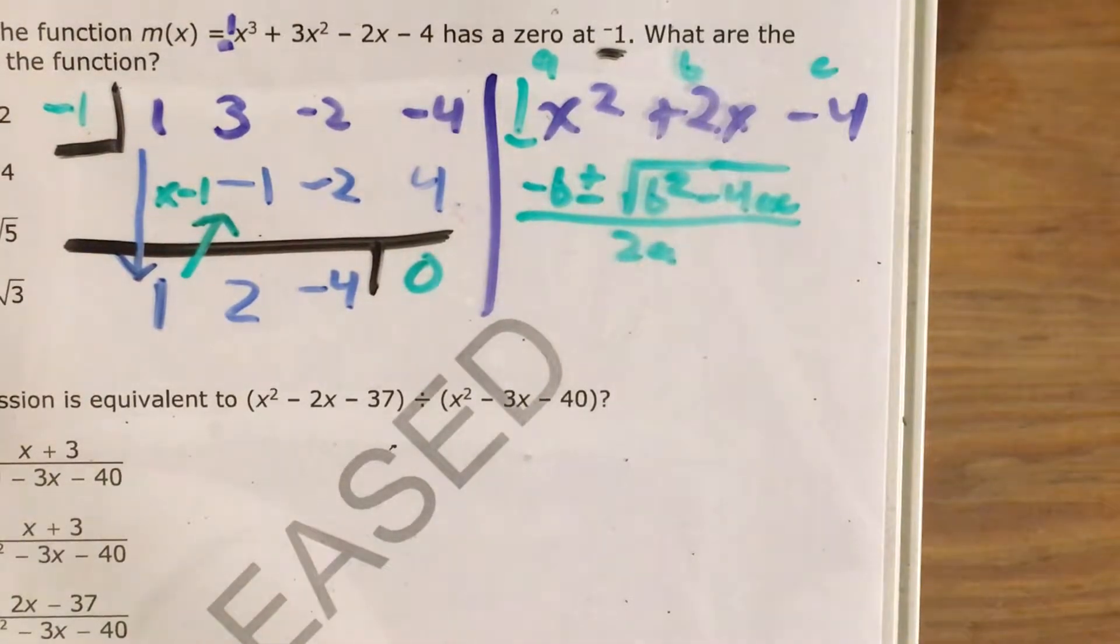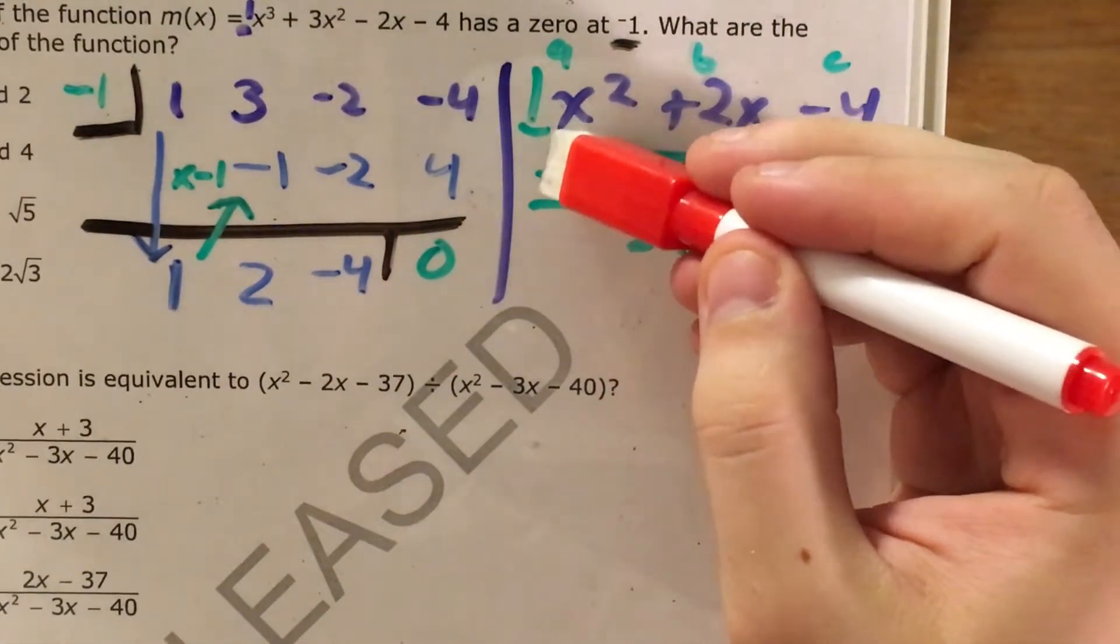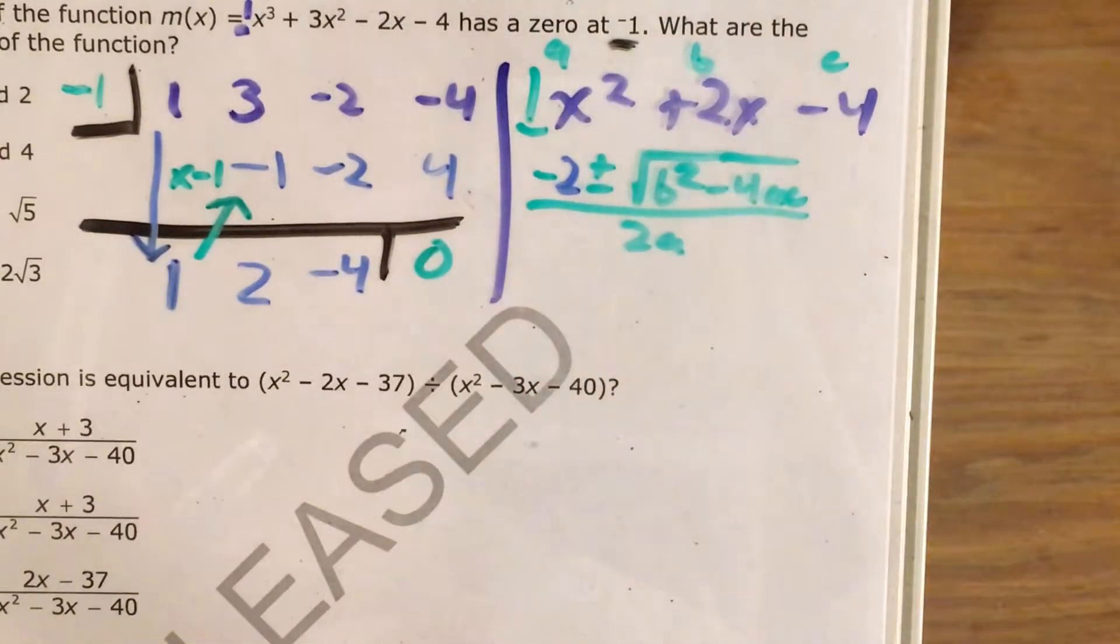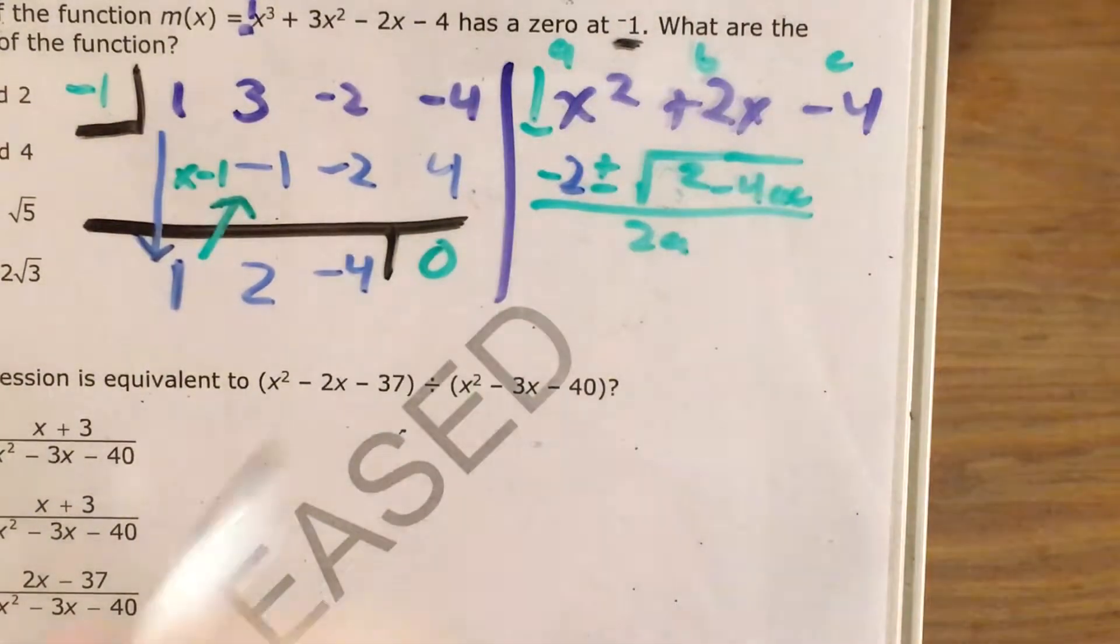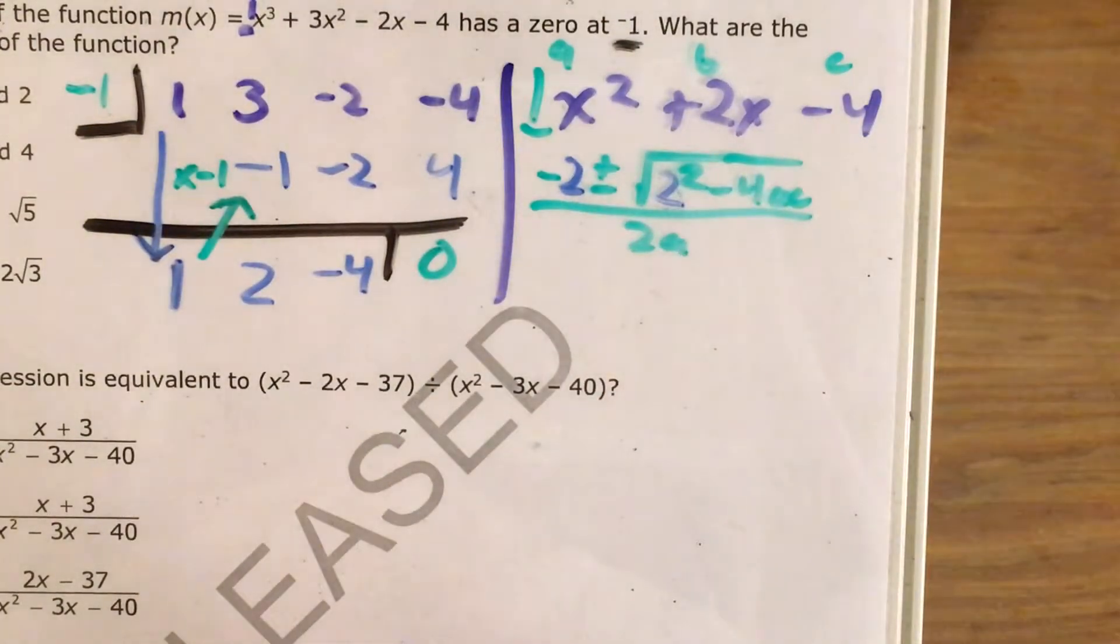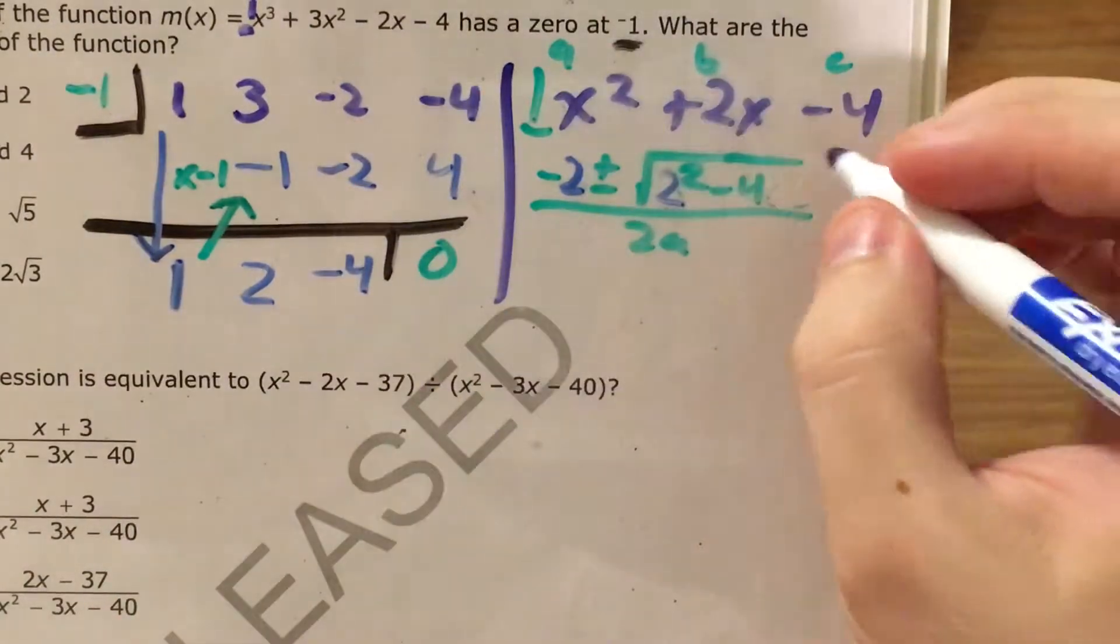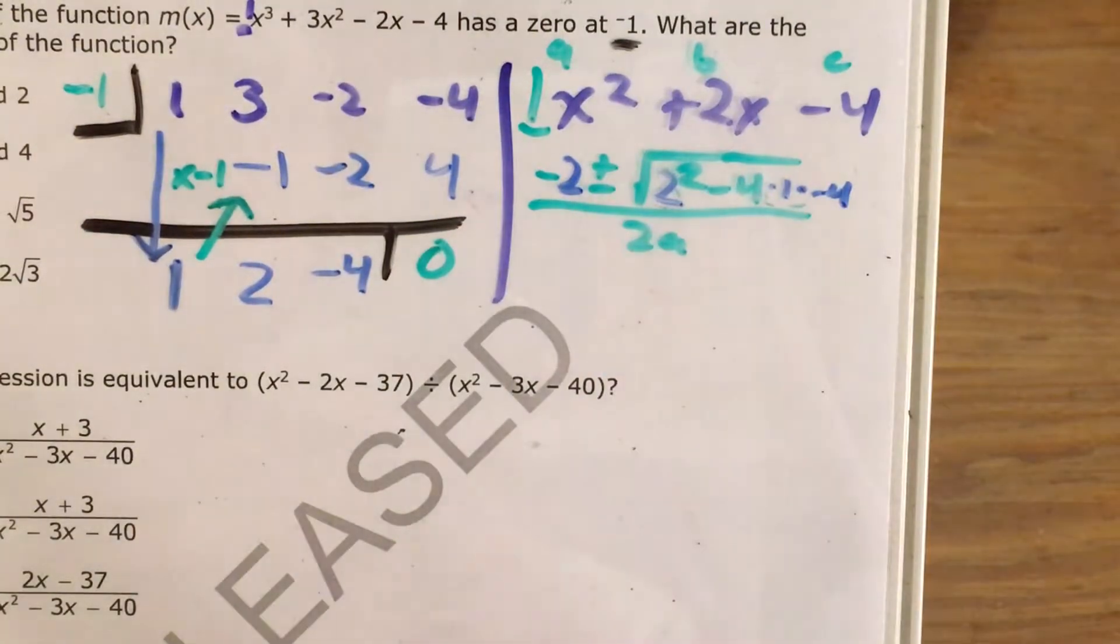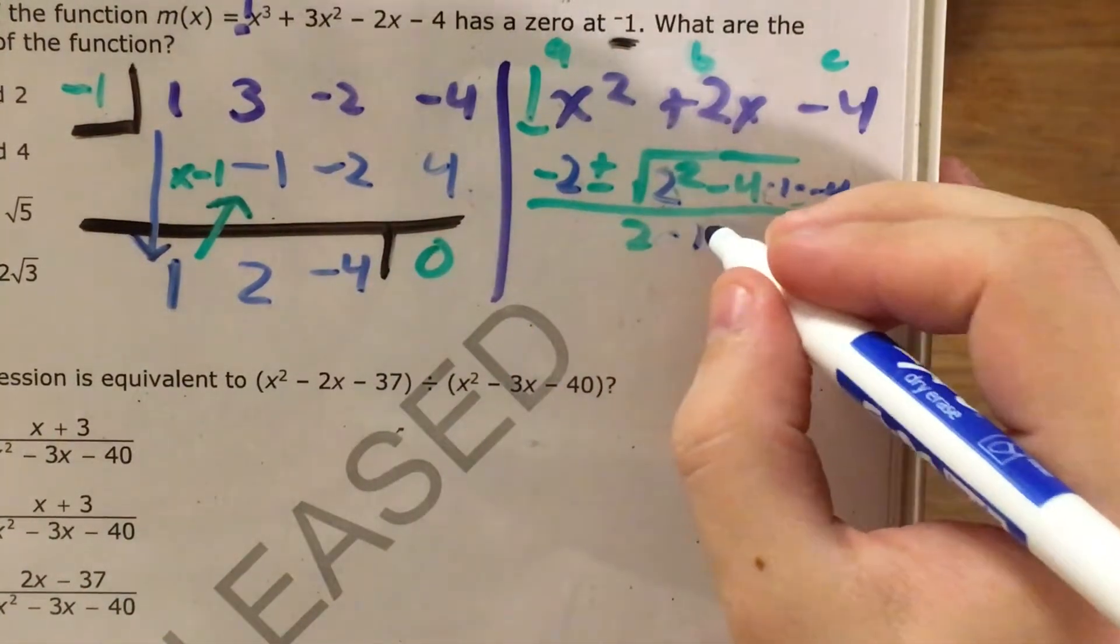So the first thing I'm going to do is go ahead and plug all those numbers into the quadratic formula. Actually, for the sake of space, just use an eraser for this and plug them in right here. So negative b becomes negative two. Inside the square root, b squared becomes two squared. And then minus four ac becomes minus four times one times negative four. And this is all over, now instead of two a, it's going to be two times one.